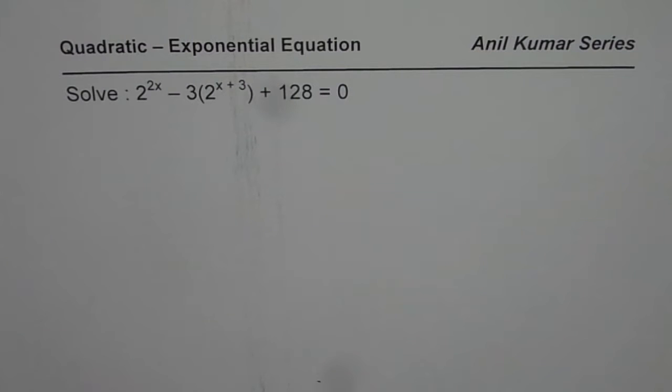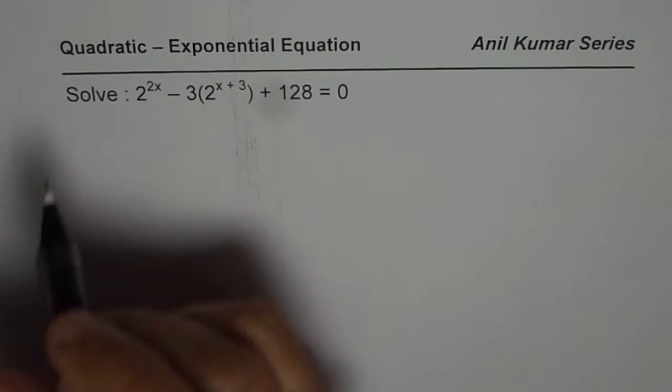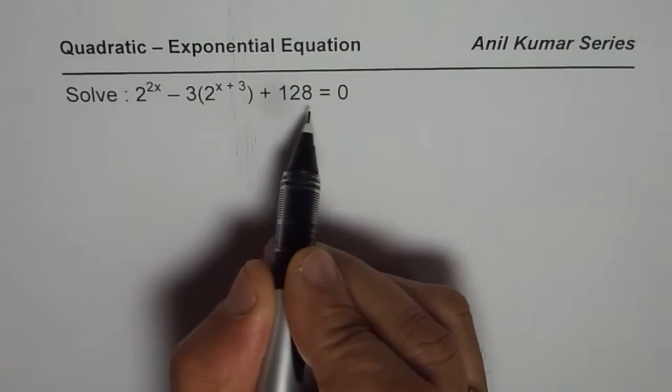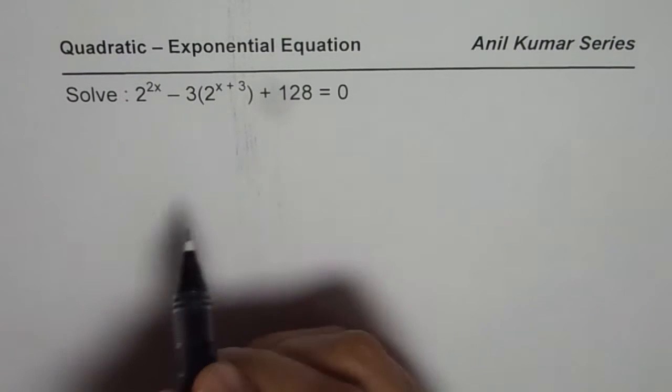Solve 2 to the power of 2x minus 3 times 2 to the power of x plus 3 plus 128 equals to 0. When we say solve it means find the value of x so that this equation is satisfied.